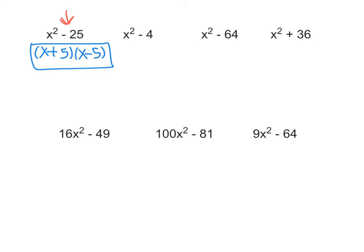The next one, x squared is a perfect square. 4 is a perfect square, because it's 2 times itself, or 2 times 2. And again, very important, it is subtraction. So we can write our two sets of parentheses. x times x gives us the x squared. 2 times 2 gives us the 4. And one needs to be plus, and one needs to be minus. And we have factored it.